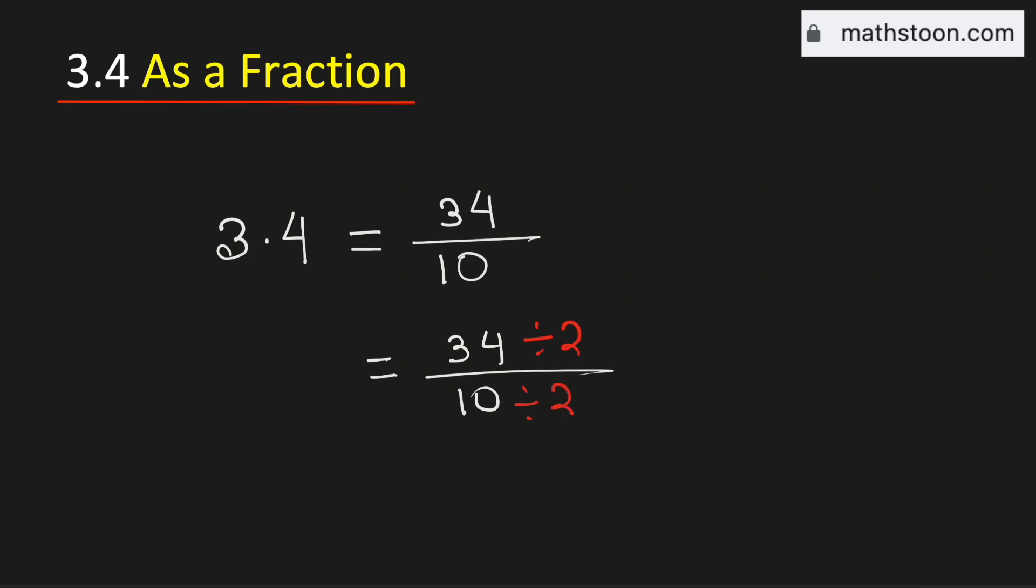And if we do it, we will get 17 over 5. And this fraction cannot be simplified further because both 5 and 17 are prime numbers.